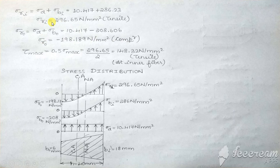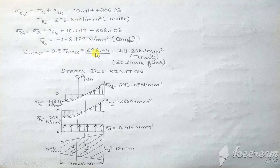Comparing the magnitudes of Sigma Ri and Sigma R0, the greater value between these two divided by 2 gives the maximum shear stress. The greater magnitude is 296.65, so maximum shear stress = 296.65 / 2 = 148 N/mm². This exists at the inner fiber and is tensile in nature.